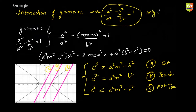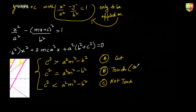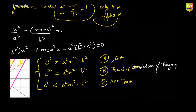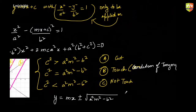These conditions are to be applied on the standard case only. If your hyperbola changes, your situation will also change. The condition c² = a²m² − b² is called the condition of tangency. Because of this you can write the equation of a tangent if you know the slope — this is called the slope form.